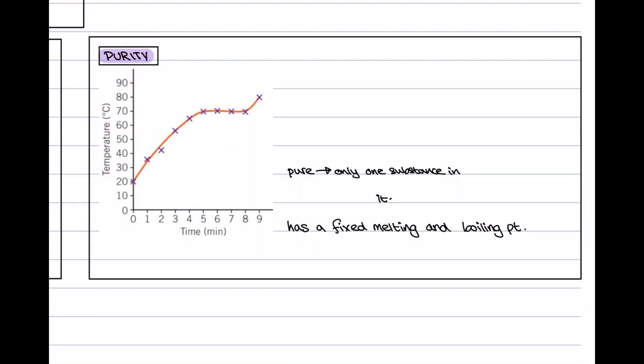Now we're going to quickly look at the purity of a substance. When you look at something in the supermarket, it might say pure water or pure fruit juice — that just means it only has that one ingredient in it. In chemistry and physics, when we talk about something being pure, it only has one substance in it. So pure water in science means that water only has particles of water in it and nothing else — no other impurities.